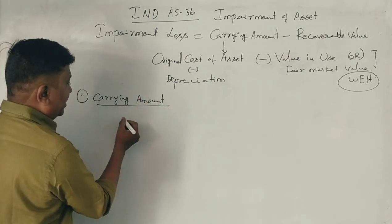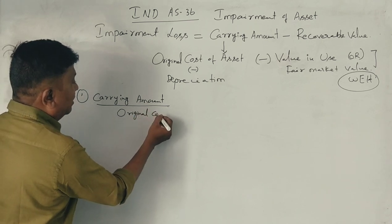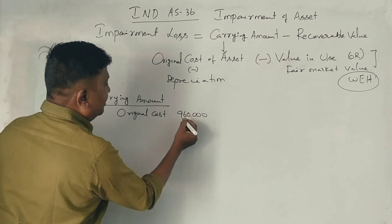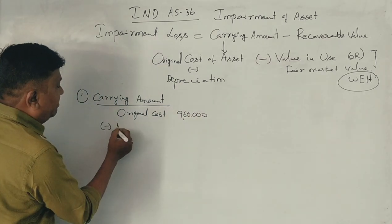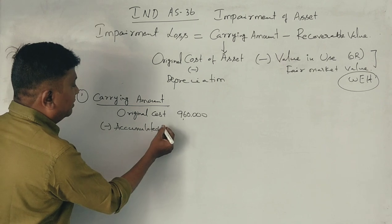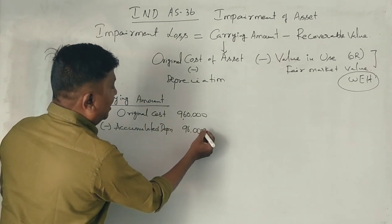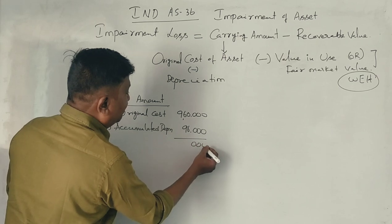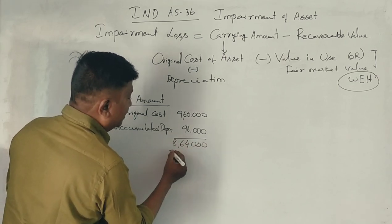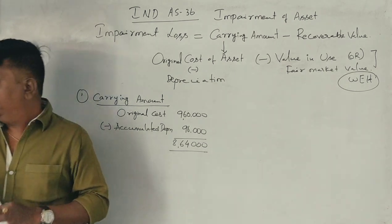First, calculate the carrying amount. Original cost less accumulated depreciation: ₹9,60,000 minus ₹96,000 gives a carrying value of ₹8,64,000.